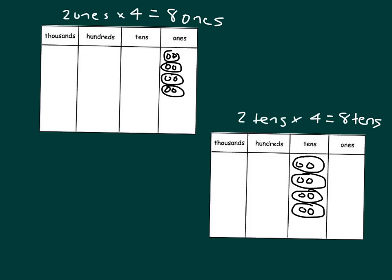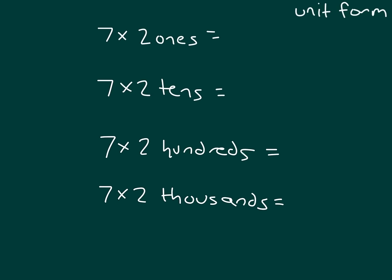What would happen if we went two hundreds times 4? Did you think that we would get eight hundreds? What do we write eight hundreds as in standard form? It's equal to 800.